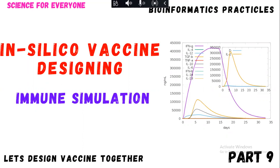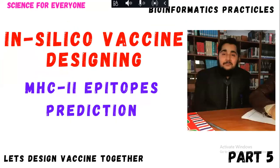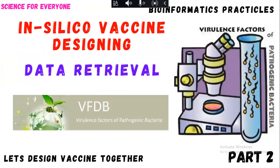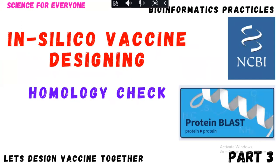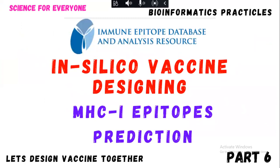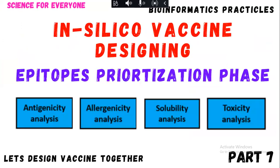As you know, I have started a video series in which I am teaching you how to design a multi-epitope vaccine using bioinformatics tools. In the previous videos, I have discussed what a multi-epitope vaccine is, given the entire introduction in part one. In part two, I showed data retrieval and data mining. In part three, homology check. In parts four, five, and six, epitope prediction. After that, I showed you how to perform different analyses of your epitopes and filter out the epitopes of interest.